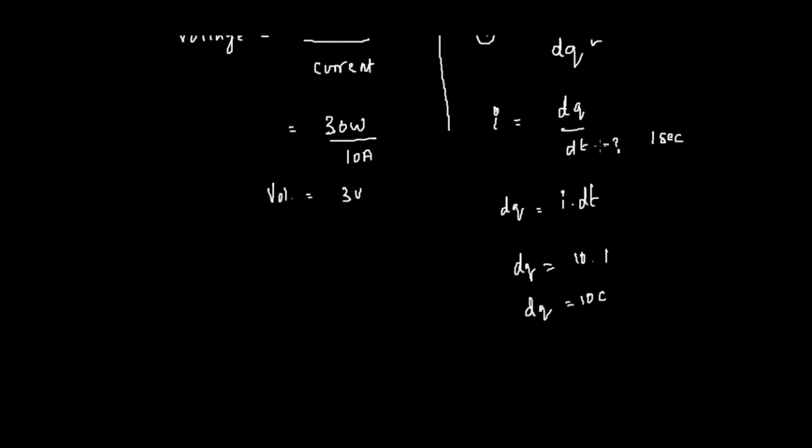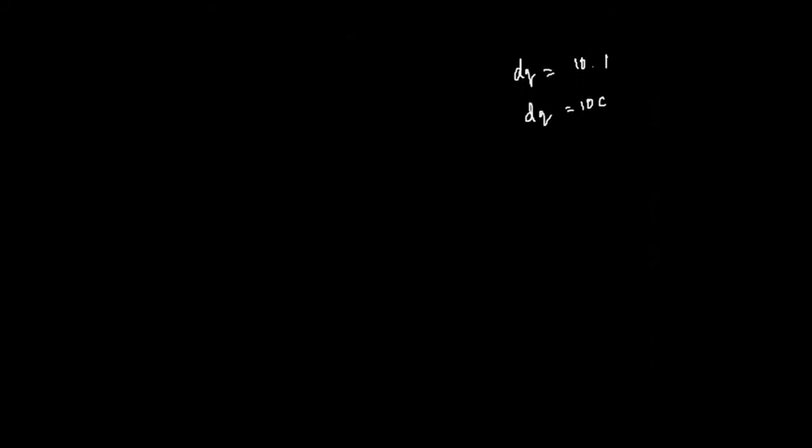We still don't know the value of dw, so we apply this to the voltage formula. V is work done by charge, so 3 equals dw over 10, which gives you 30 joules of energy.